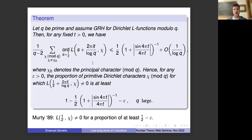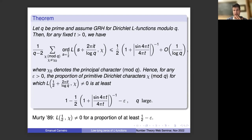Chi zero is the principal character modulo q. What this result says is that for any epsilon, the proportion of primitive Dirichlet characters modulo q for which the L-function at this height is not zero is at least one minus this number on the right. At the central point one-half, this is an old result of Murty from 1989, saying the proportion of non-vanishing at the central point is at least one-half minus epsilon.